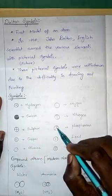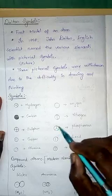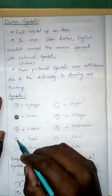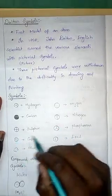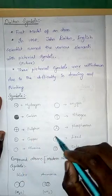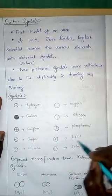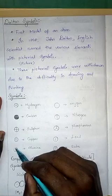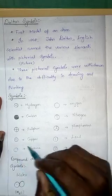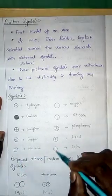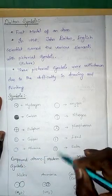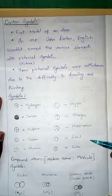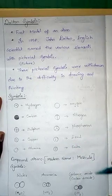A circle with three lines drawn from the center is called phosphorus. A circle with the letter C inside is called copper. A circle with the letter L inside is called lead. A circle with four dots is called alumina. A circle with double vertical lines is called soda.